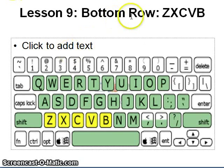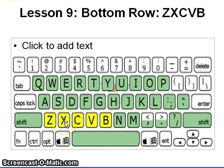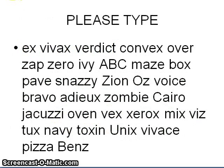For the bottom row left hand: letter Z, use your left little finger. X, left ring finger. Letter C, left middle finger. V and B, left index finger. This is your activity for that lesson.